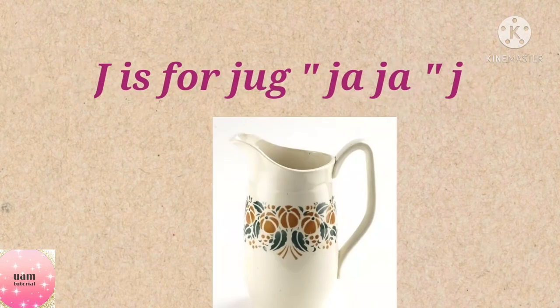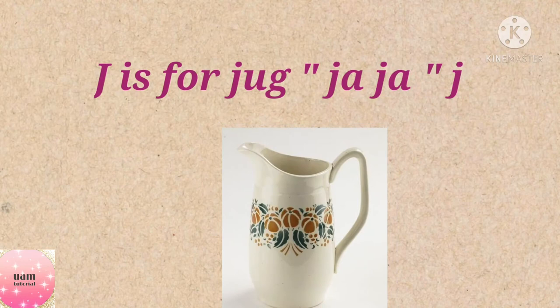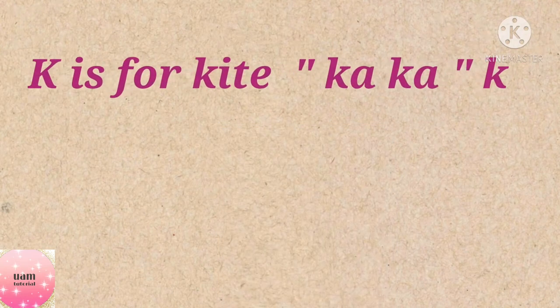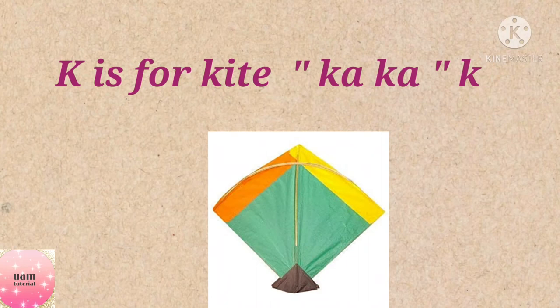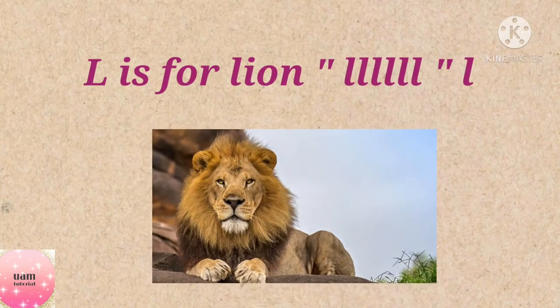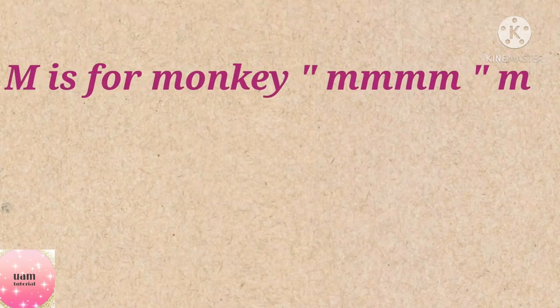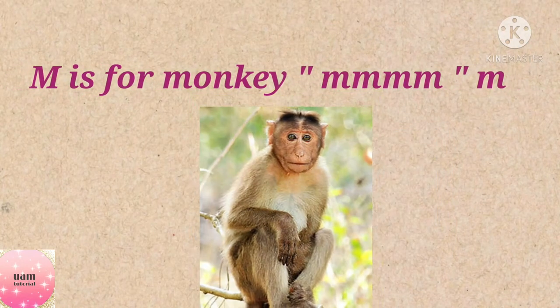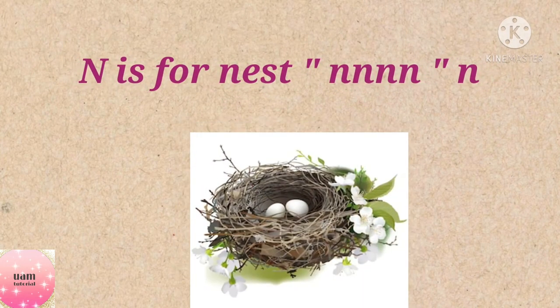J is for jug, j j. K is for kite, k k k. L is for lion, l l. M is for monkey, m m. N is for nest, n n.